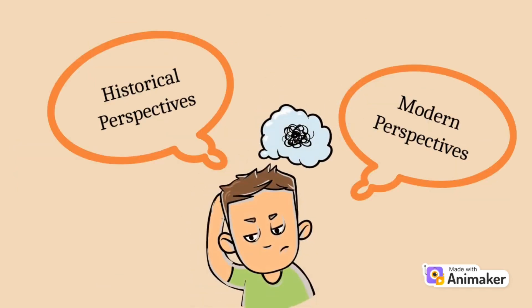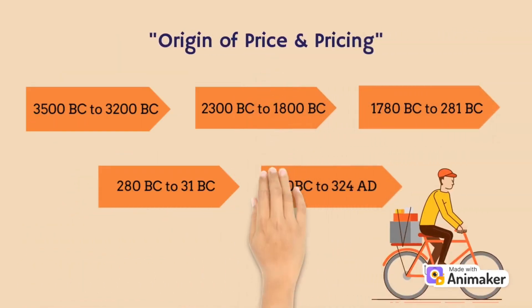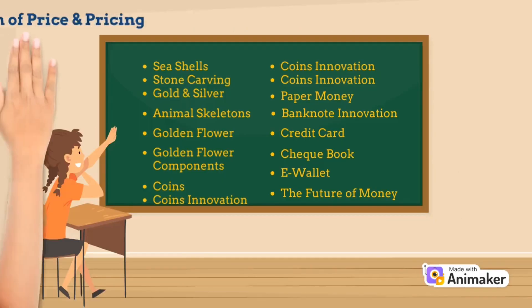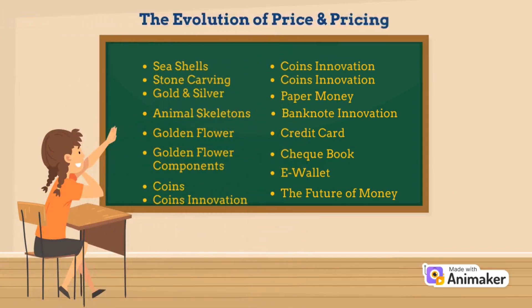We also have the historical and modern perspective on pricing. We also discuss about the origin of price and pricing. They started on 3500 BC until 324 AD. Lastly, we have the evolution of price and pricing. We have seashells, stone carving, gold and silver, animal skeletons, golden flower, golden flower components, coins, coins innovations, paper money, banknote innovations, credit cards, checkbook, e-wallet, and lastly, a future of money.